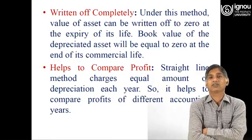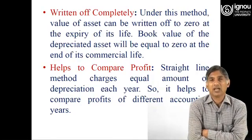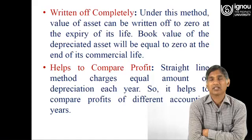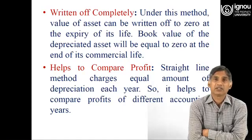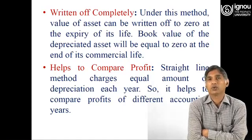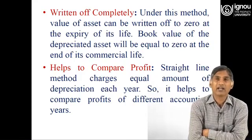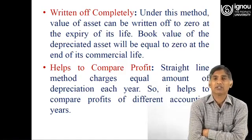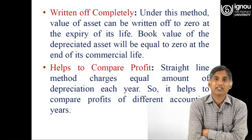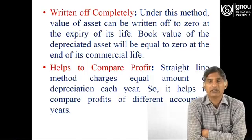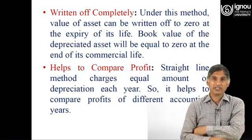Fifth, complete return of cost — when depreciation is charged evenly throughout the expected useful life of the asset, the book value of the asset becomes zero at the end of its useful life, meaning the entire cost of the asset can be charged as depreciation. Sixth, it helps to compare profits — since straight line method charges an equal amount of depreciation each year, it helps to compare the profit of different accounting years.